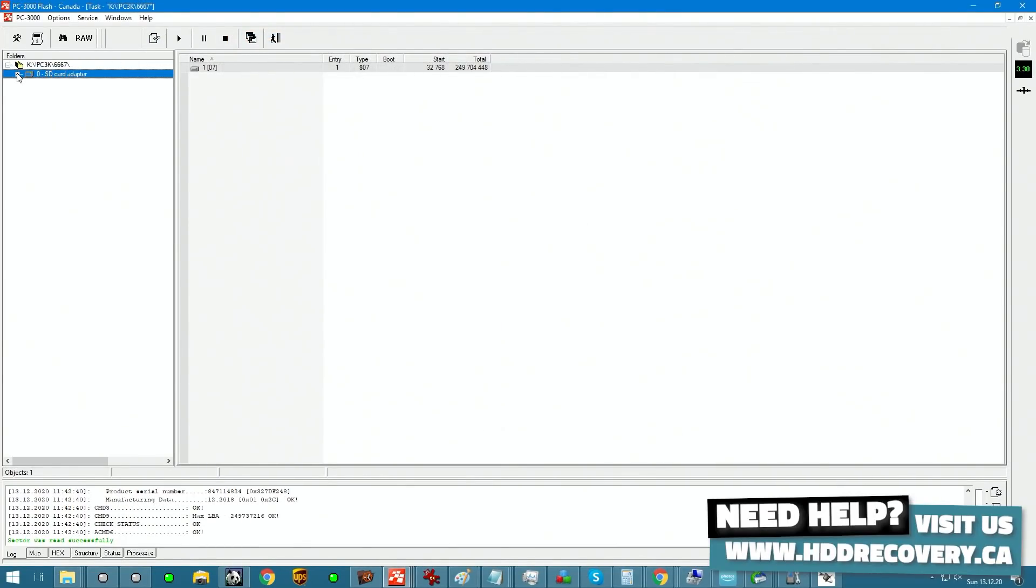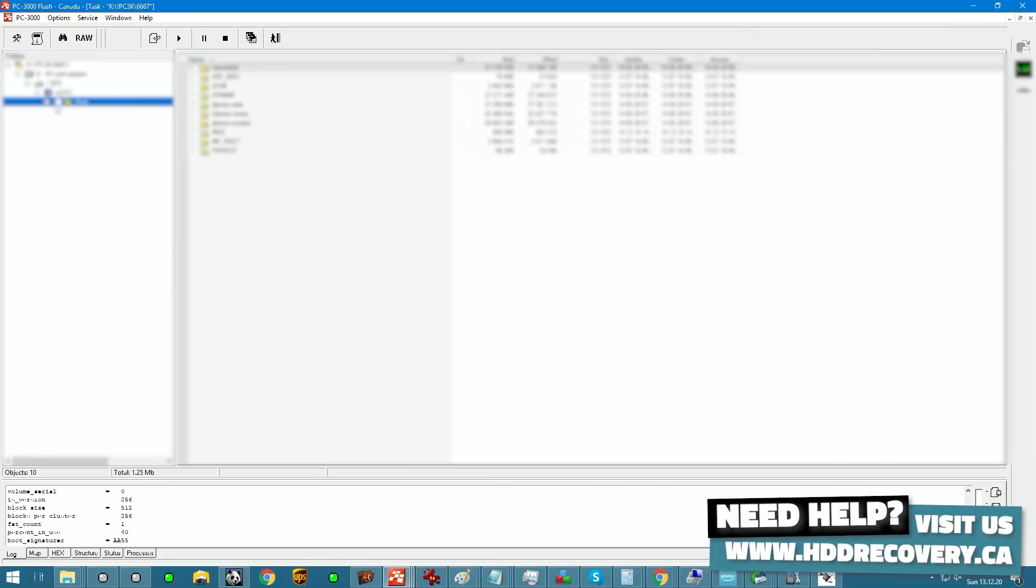And if we were to go ahead and browse it now, we actually see that there is a partition. And we will be able to access that partition right now. There is the content. The DCIM folder. Bunch of other stuff. So at this point I would just clone out the card. Yay. The card is working again. And the data is accessible.